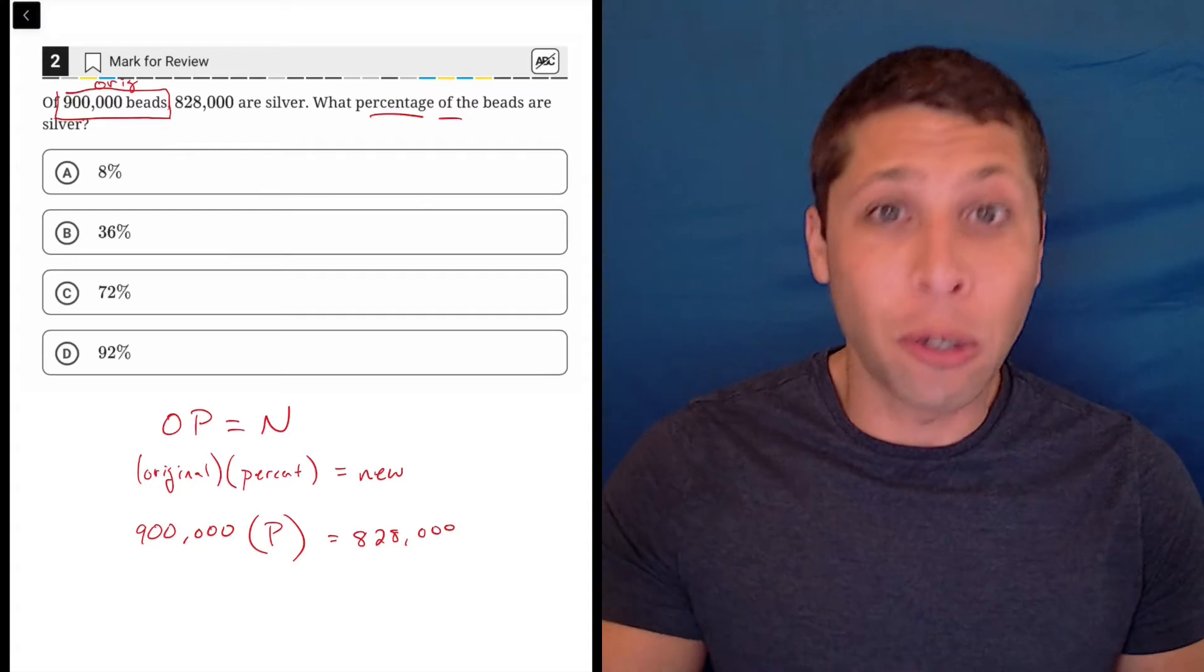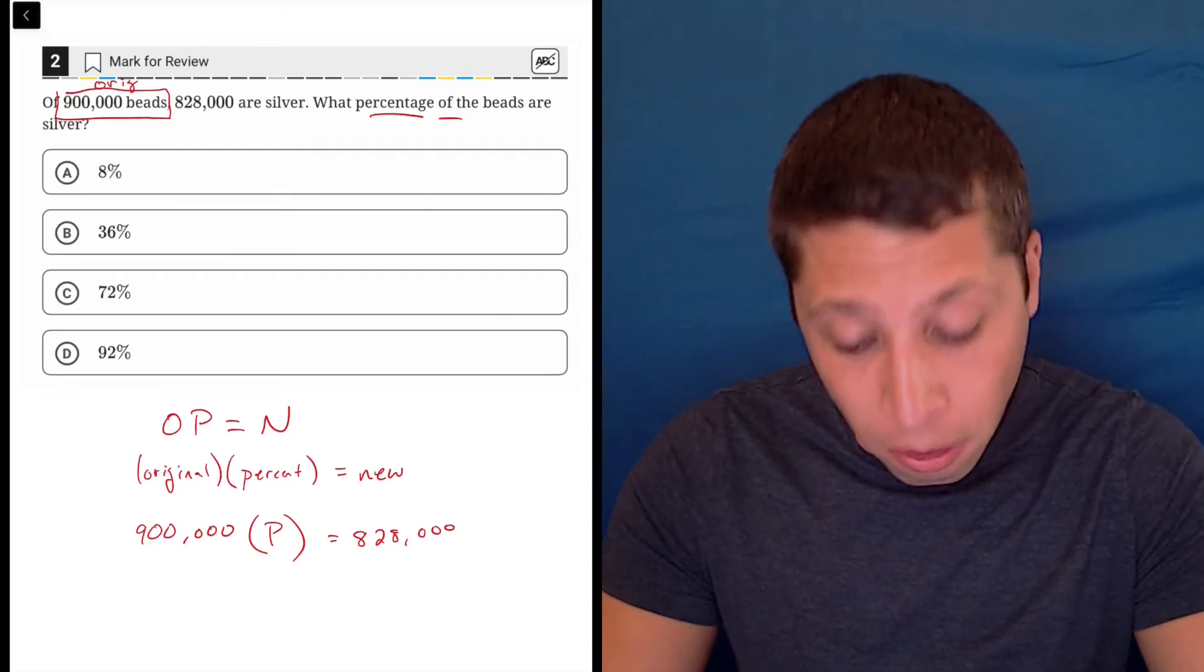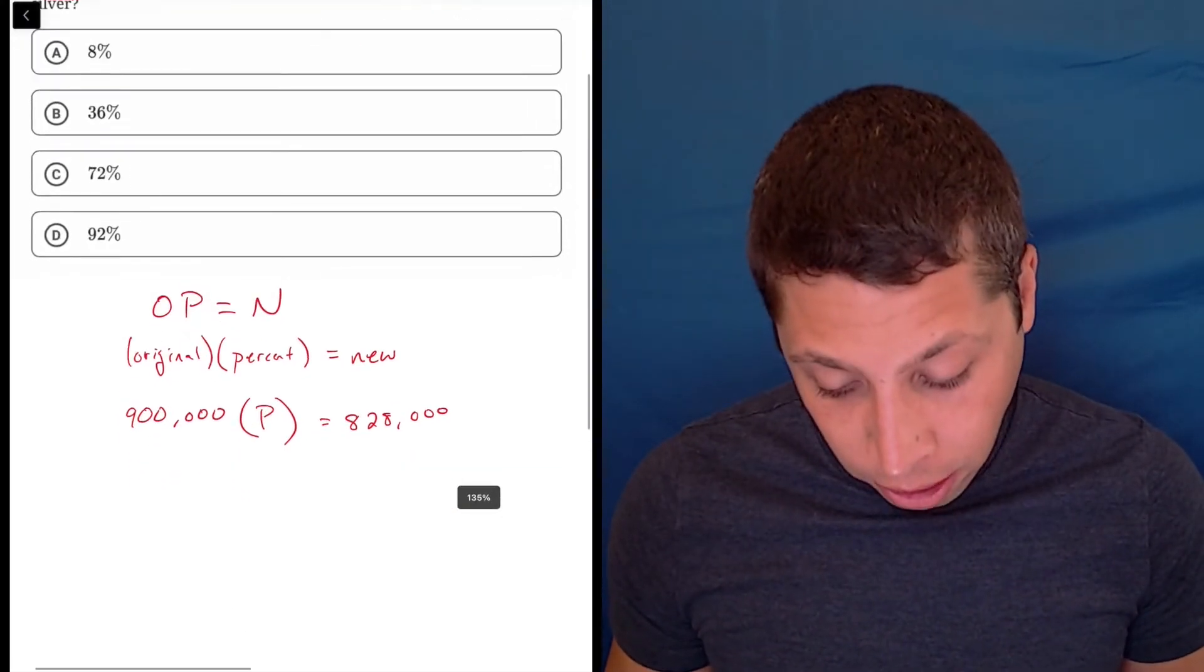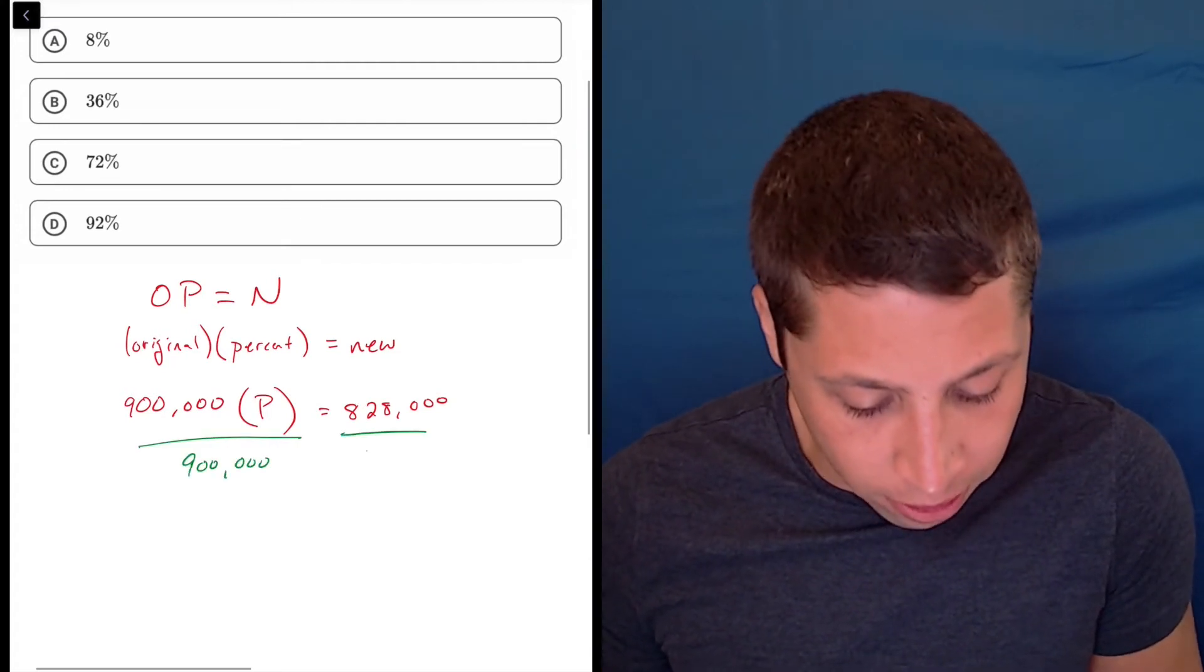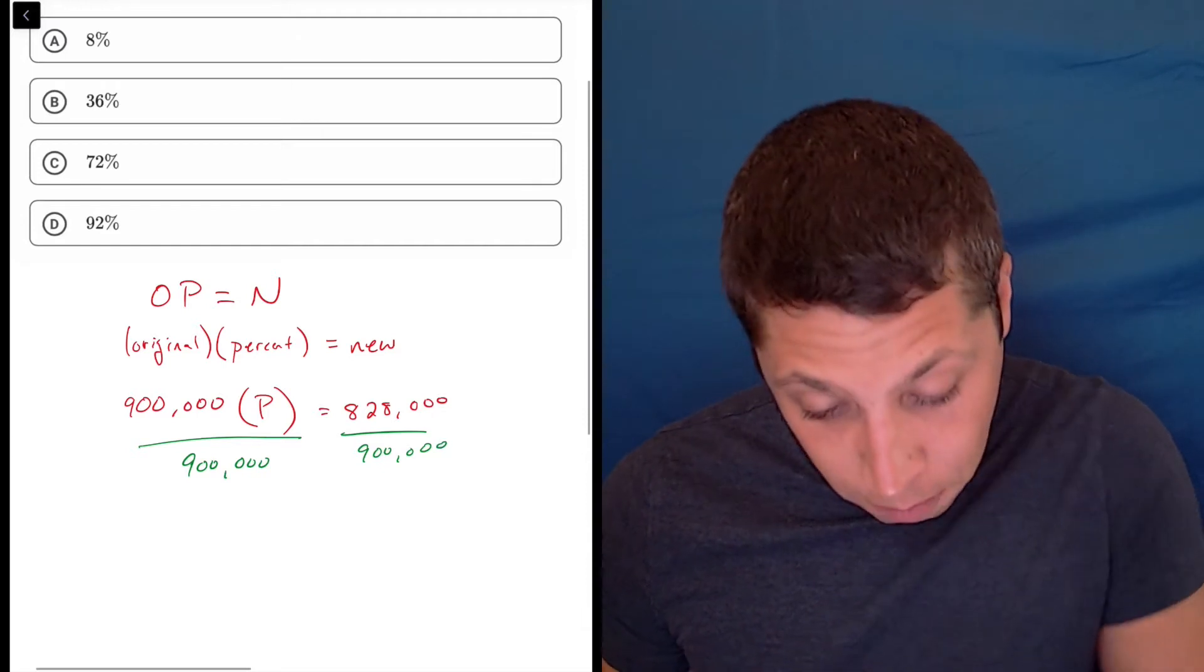And then just like with any kind of equation, if we have a variable, we should probably solve for it. So in this case, the variable is attached to the 900,000, so we're just going to divide both sides by 900,000 to get our value of P.